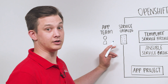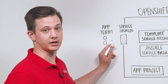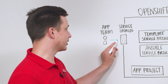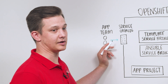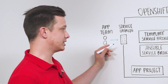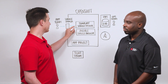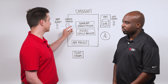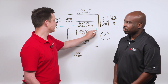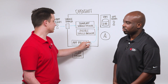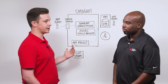The service catalog allows app teams to search for different application types they might want to deploy in the cluster. Let's say they wanted to deploy a Node.js app — they would search the service catalog and pick a template, which requires a number of parameters such as a Git source URL or whatever else they might need. When they submit, the service catalog passes those parameters over to the template service broker, which then provisions the resources in their project, such as deployment configs, build configs, and anything else they need to run their application.